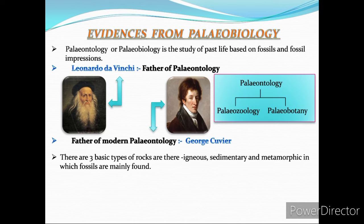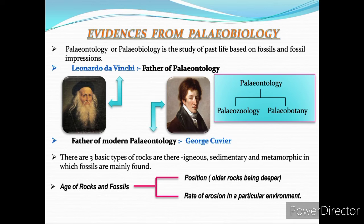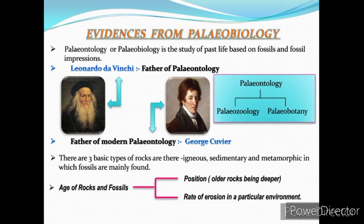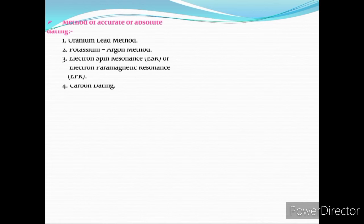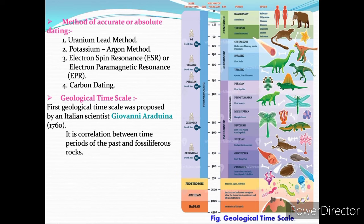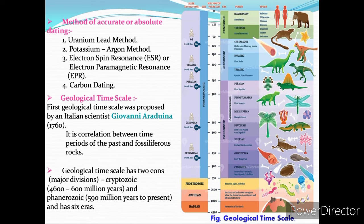Regarding the age of rocks and fossils — in the 19th century, a mechanism for accurate dating was not available. Relative dating was carried out by estimating position and rate of erosion. In the modern era, methods include the uranium-lead method, potassium-argon method, electron spin resonance, and most commonly, carbon dating. The first geological time scale was proposed by Italian scientist Giovanni Arduino. It correlates time periods of the past with fossiliferous rocks, has two major divisions called Eons — Cryptozoic and Phanerozoic — and has six eras.